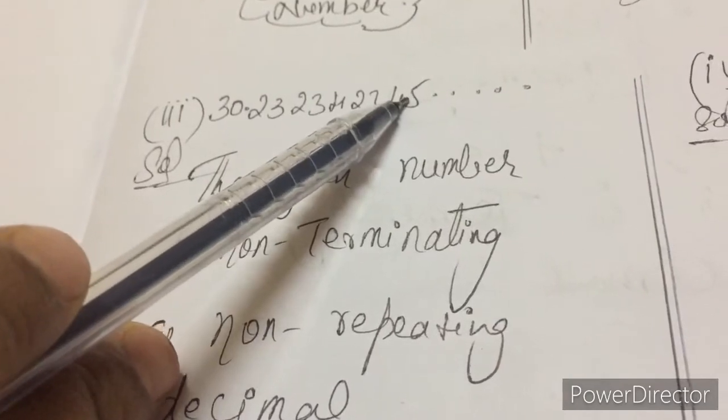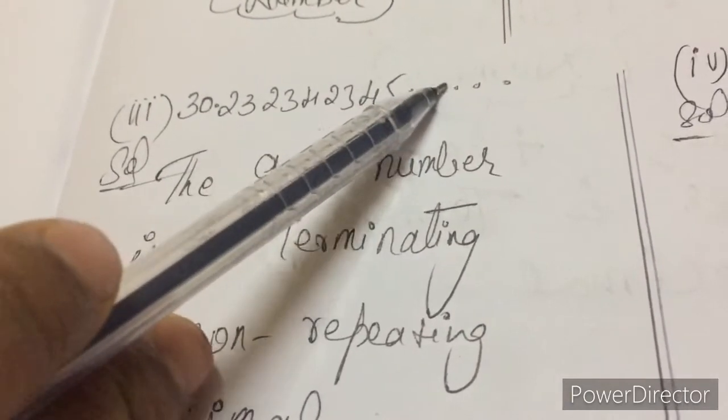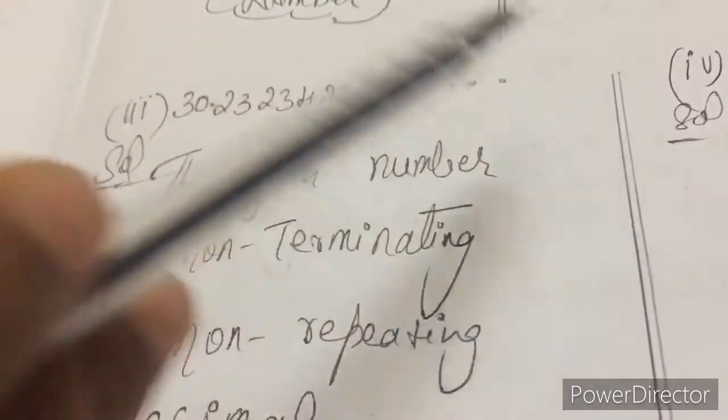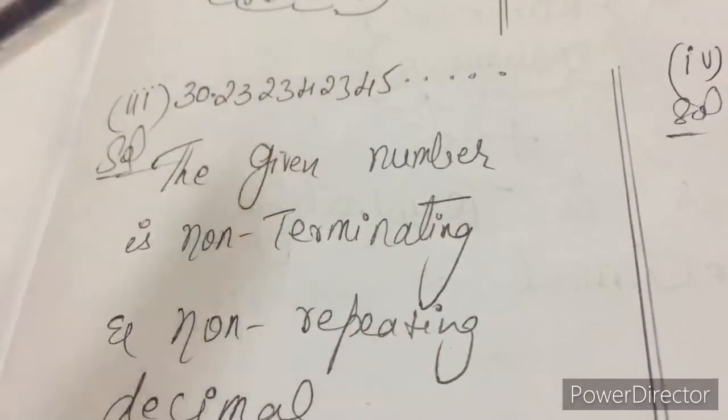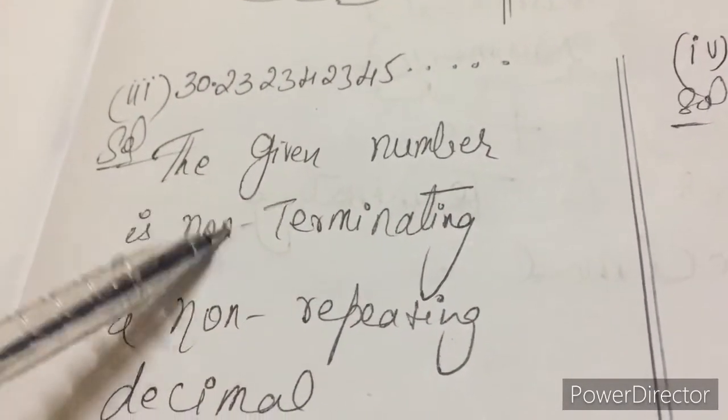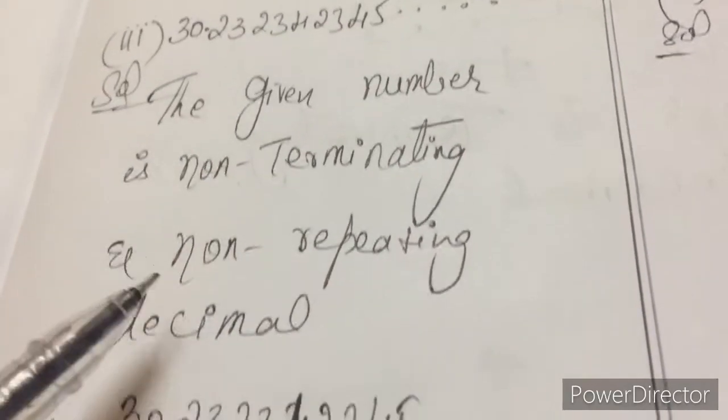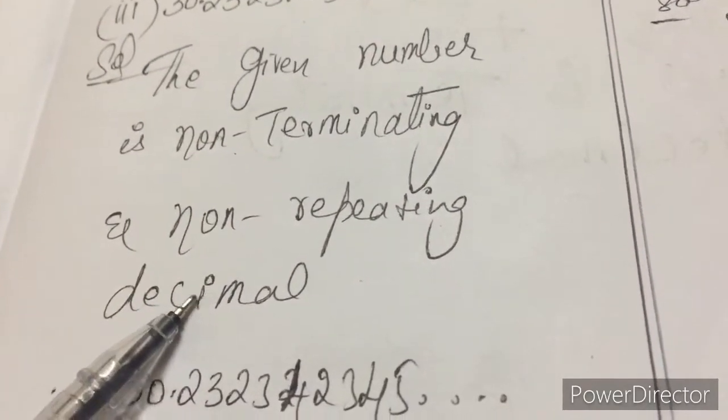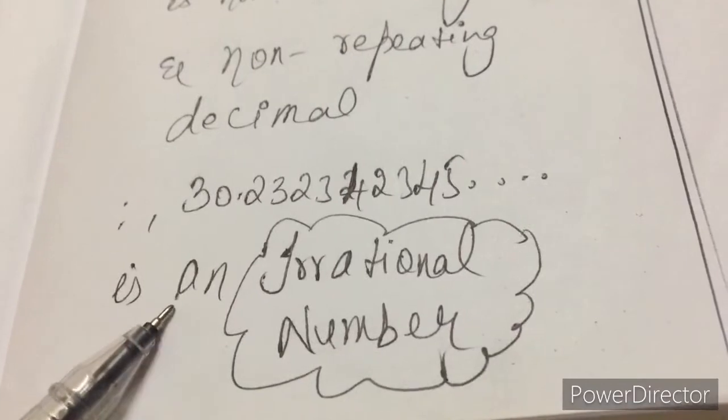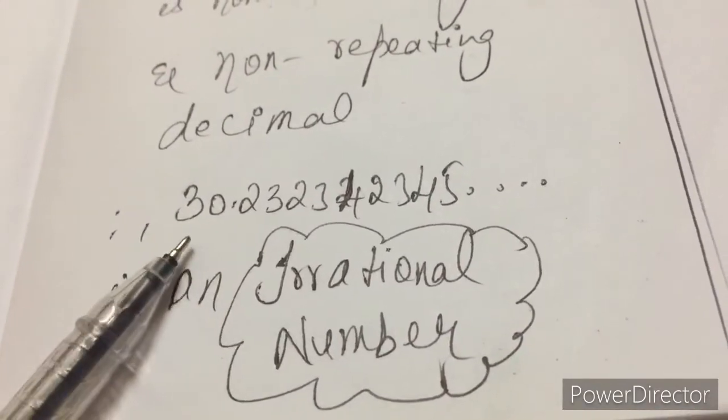Then again the next number will be 23456, then 234567, and so on. So the given number is non-terminating and non-repeating decimal. That is why this number is called an irrational number.